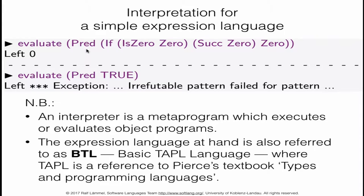BTL has predecessor, successor, and zero for natural numbers. It has true and false for booleans. It has an 'is zero' test to check whether a number is zero or not. And it has a conditional — an if — with a condition, a then-branch, and an else-branch. At a Haskell prompt, evaluation either succeeds — for example an expression evaluates to zero — or fails, because we cannot compute the predecessor of the boolean value true. So we get an exception.